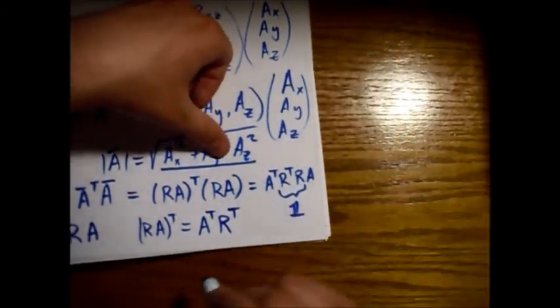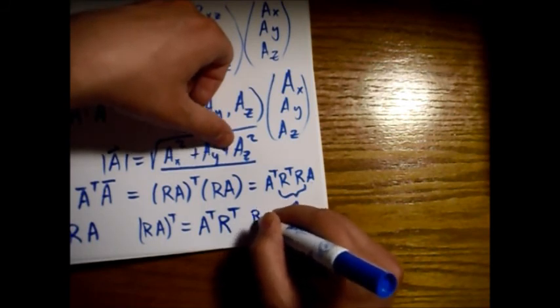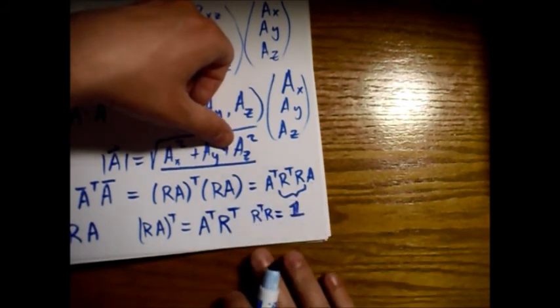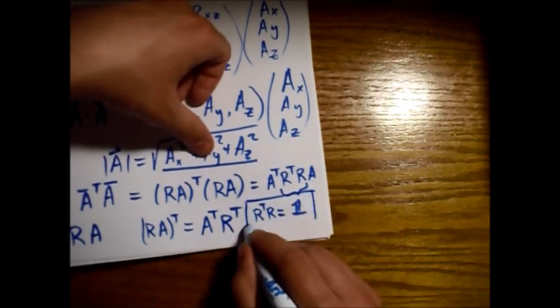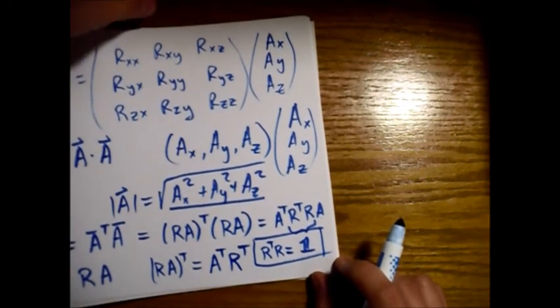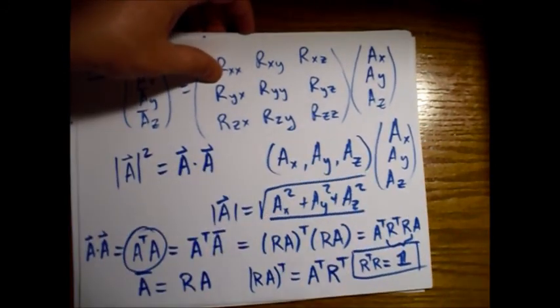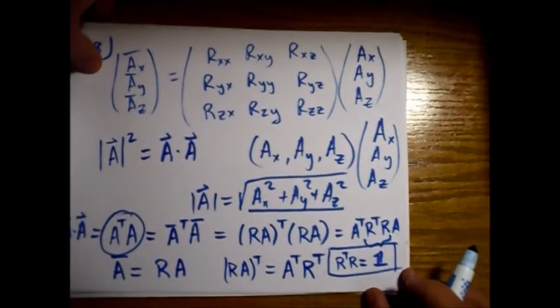So that's the condition, R transpose R equals the identity matrix. This is the condition that this matrix has to satisfy in order to preserve the length of any vector that it rotates. And there's a special name for this.